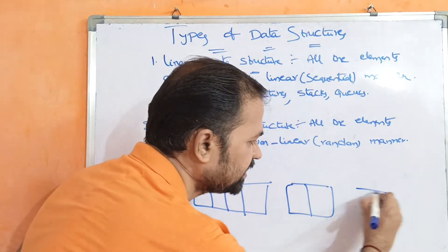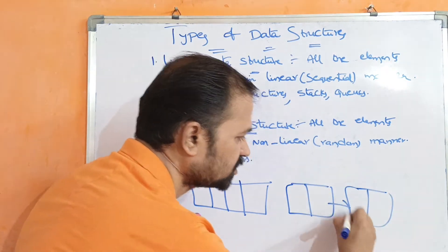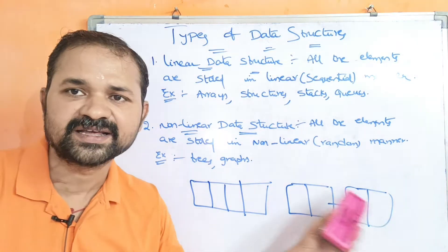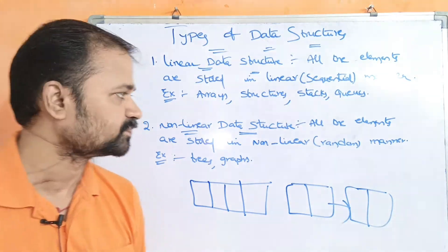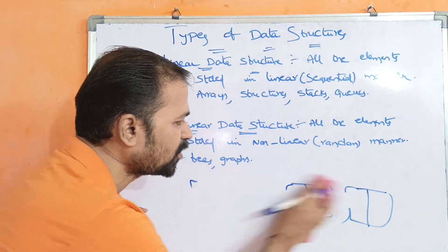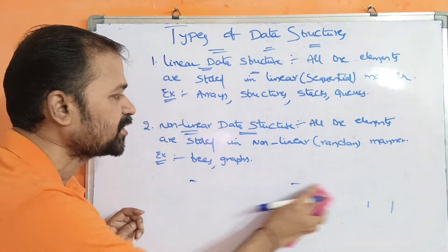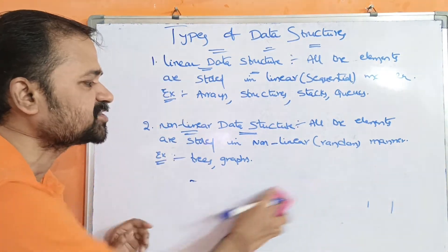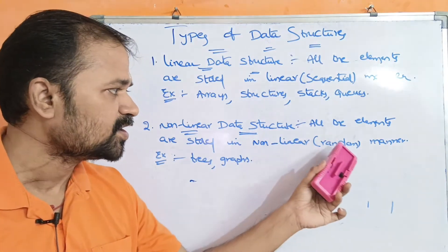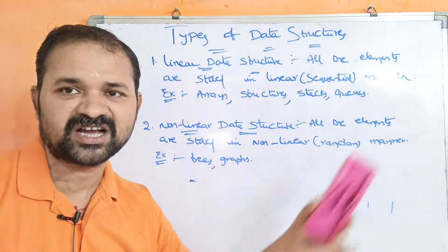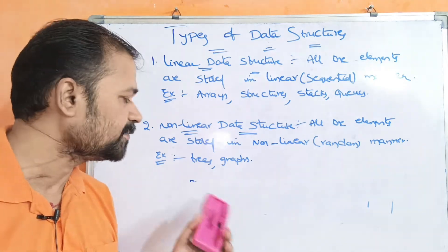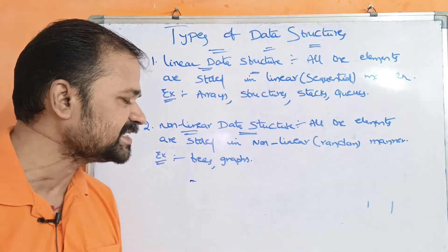Linked list ante yandhi collection of nodes. So nodes ante yandhi linear ga one by one, sequential ga store outhi. Second type of data structure yandhi ante yandhi non-linear data structure. Non-linear data structure ante yandhi all the elements are stored in non-linear fashion.